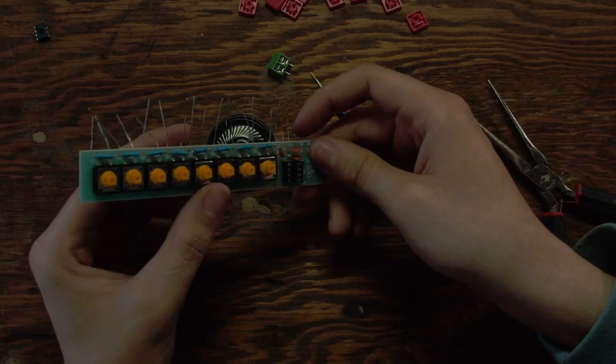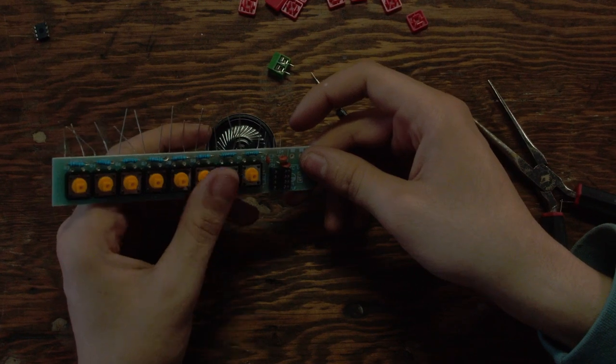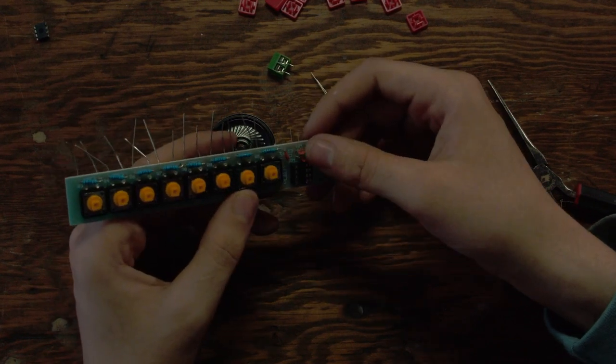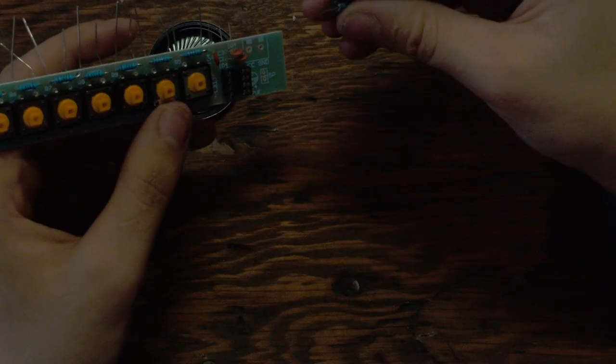Switch one to switch six is going to be 2Ks then 1K and a 10K. Then you got your three capacitors up here. Then your big capacitor.